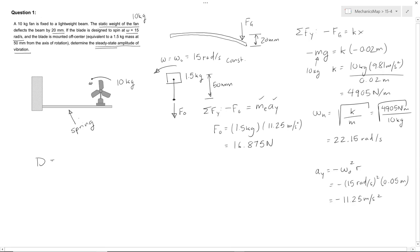The equation for that is the amplitude equals F naught over K divided by 1 minus omega naught over omega squared. Our F naught is 16.875 newtons. Our K we found is 4,905 newtons per meter.